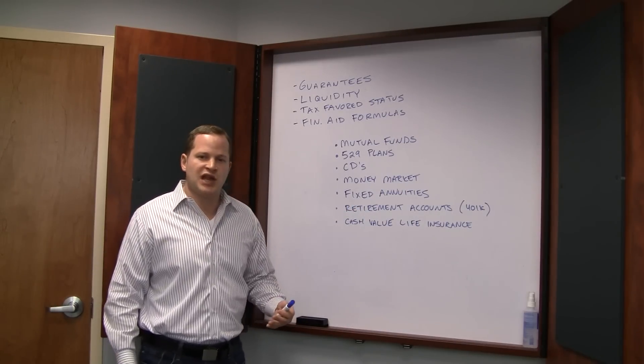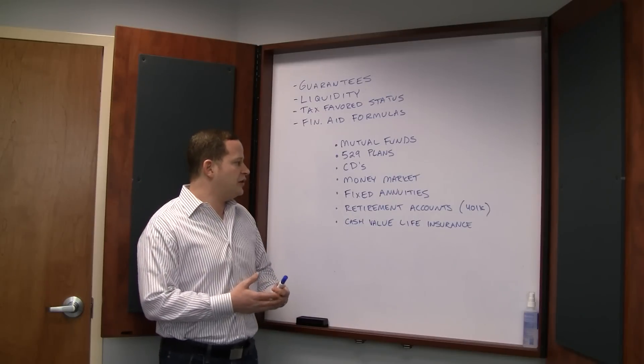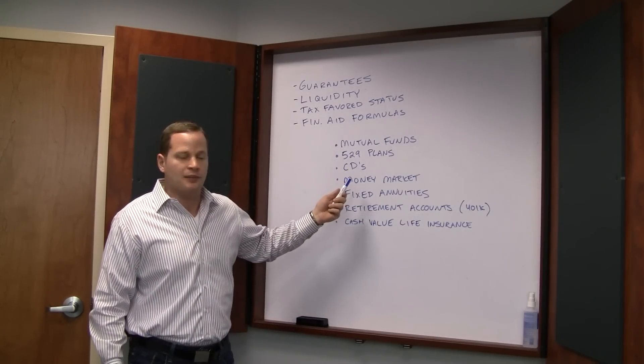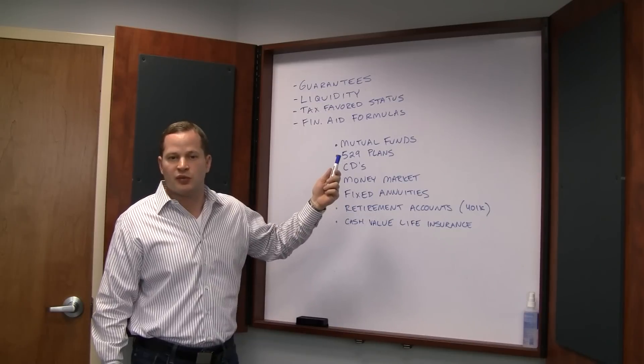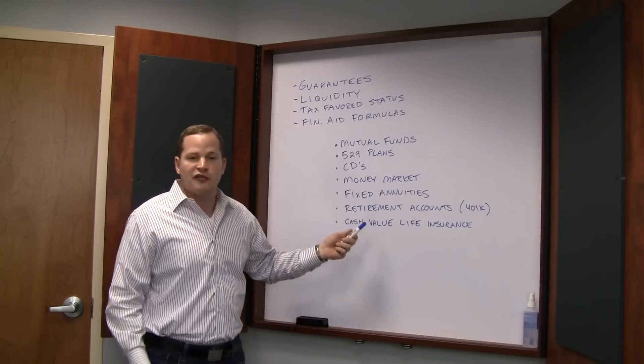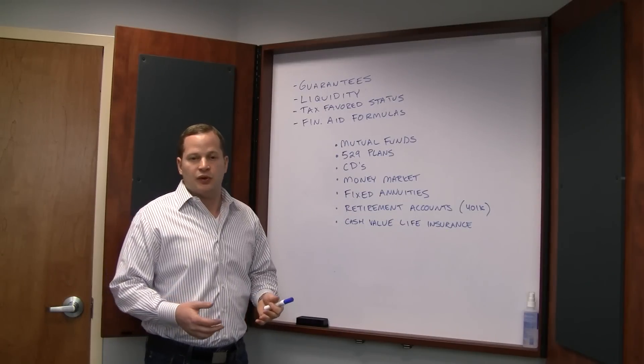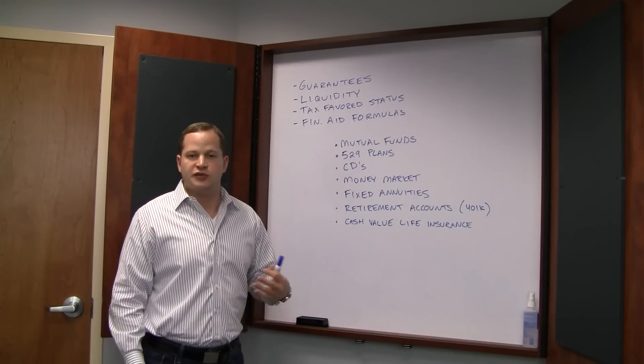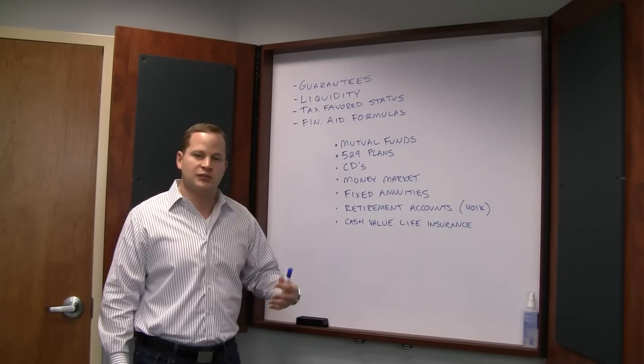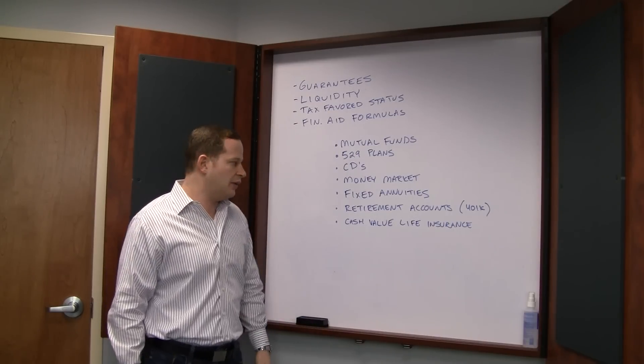Fixed annuities - fixed annuities are good from the standpoint that they typically have a higher yield than like a CD does. The money is protected typically from financial aid formulas. However, the money is locked up in that typically for most annuities, you're only able to access 10% a year when you need them, or else you face steep penalties to get out of them. Some annuities are different but most of them work that way, so you've got to weigh the pros and cons of that.